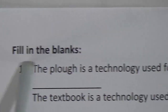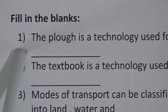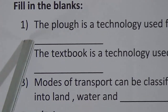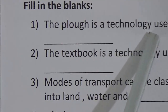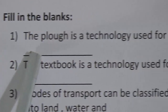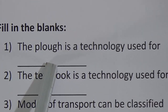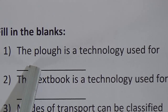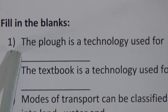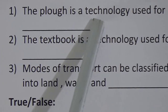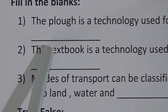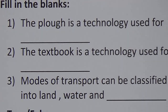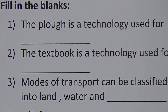You can see here a farmer ploughing with an animal, and here is a tractor and an irrigation pump — these are all used for agriculture. Now we will do some exercise. Our first exercise is fill in the blanks. Number one: the plough is a technology used for — the answer is agriculture. We write here: agriculture.